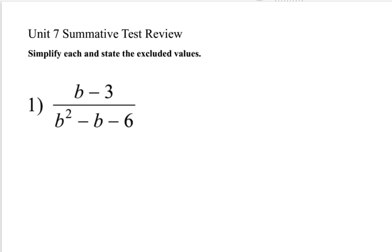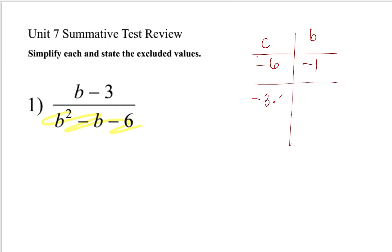How do we solve a problem that looks like number one? The first thing we need to do is analyze if there is something we can factor. The denominator is a trinomial, so we can factor this polynomial by identifying A, B, and C. Our C value is negative 6, and our B value is negative 1. Factors of negative 6 that add to negative 1 should be negative 3 times 2. Negative 3 plus 2 gives us negative 1, which is our B value.